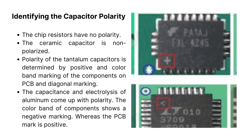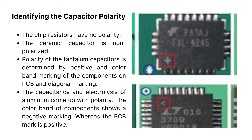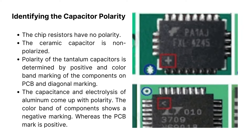Chip resistors have no polarity, and the ceramic capacitor is non-polarized. The polarity of tantalum capacitors is determined by positive and color band marking on the PCB and diagonal marking. The capacitance and electrolytic aluminum capacitors come with polarity — the color band of the component shows negative marking, whereas the PCB mark is positive.